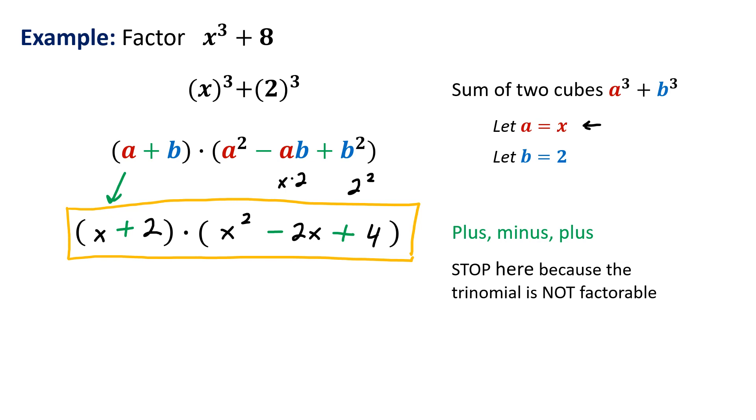Let's do a check. Let's check that this is indeed correct so I'm going to first distribute the x with everything so the x is going to get distributed that's going to give me x to the third power minus 2x squared plus 4x.